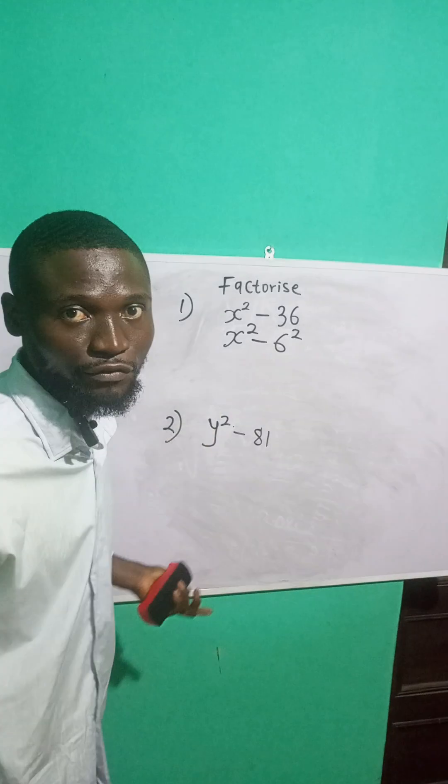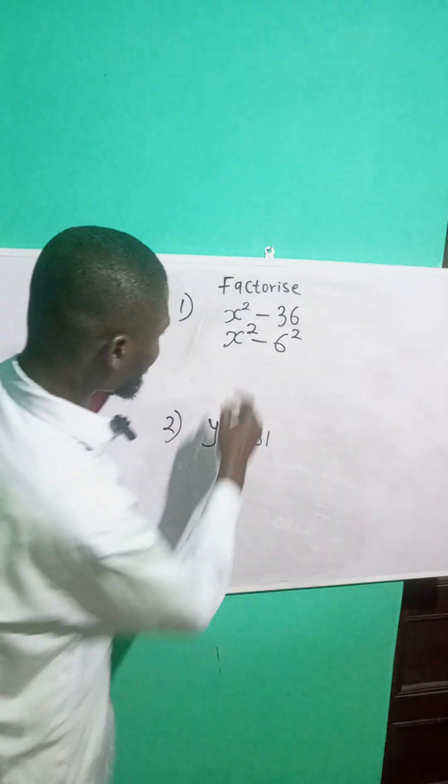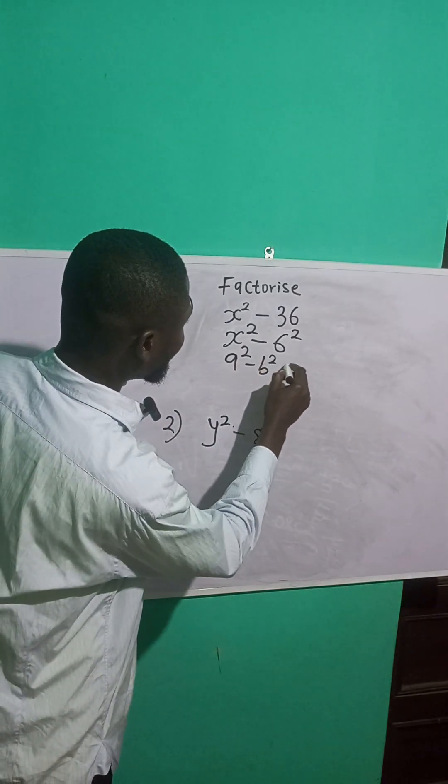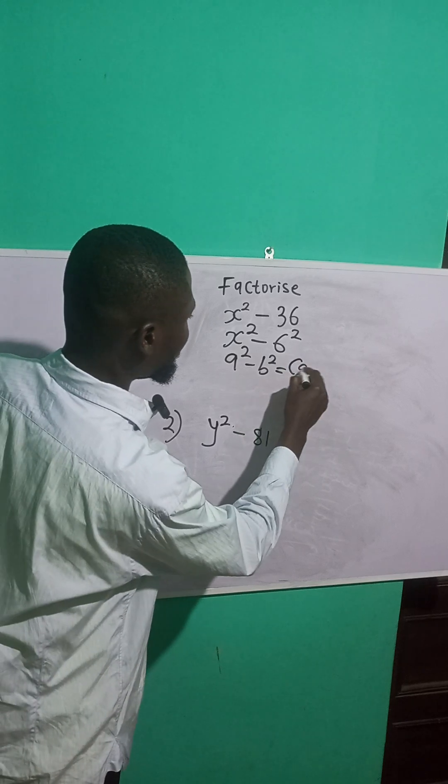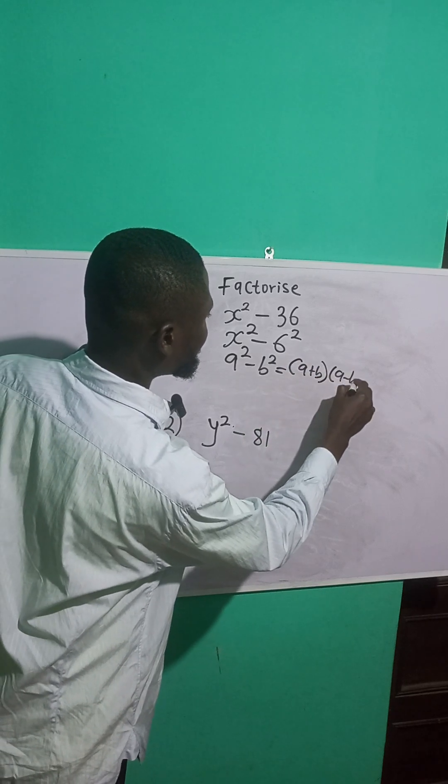Now, do you know you can apply difference of two squares here? Now, from difference of two squares, this will have a square minus b square. This can be written as what? A plus b, and what? A minus b.